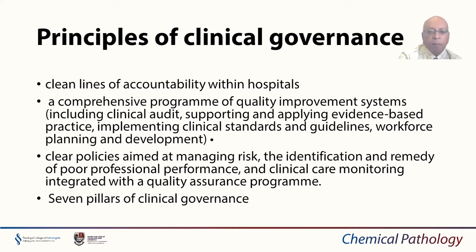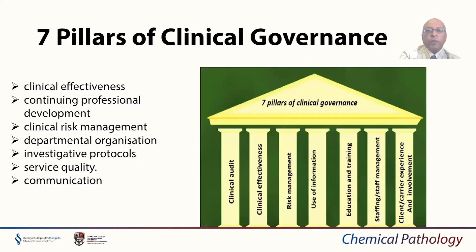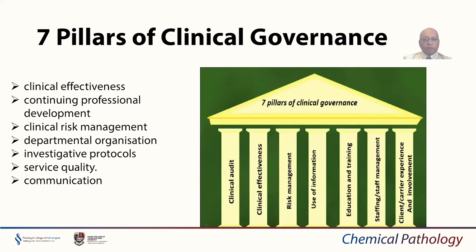The seven pillars of clinical governance are: clinical effectiveness, continuing professional development, clinical risk management, departmental or laboratory organization — for example, investigative protocols for various scenarios — service quality, and communication. You can see how all of these interrelate to each other.